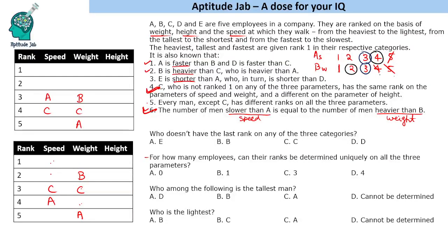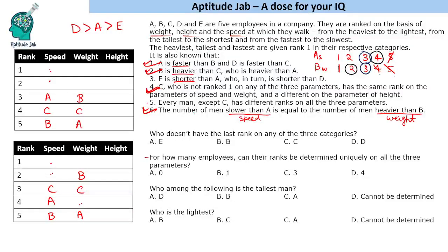D is faster than C, so D occupies one of the remaining speed positions. A is faster than B, so B fills in accordingly — in Case 1, B comes after A in speed, and in Case 2 similarly. D is faster than C so D takes one of the two available speed slots in each case.